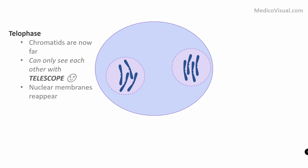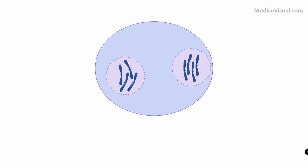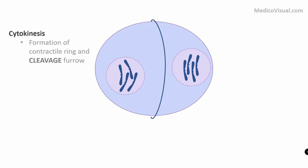Next is cytokinesis — the division of cytoplasm, organelles, and plasma membrane. In cytokinesis, there is formation of a special contractile ring on the cytoplasmic side of the cell, consisting of actin and myosin proteins. This leads to formation of a cleavage furrow — a groove — which ultimately leads to division of the cytoplasm, organelles, and plasma membrane into two, forming two daughter cells from one.